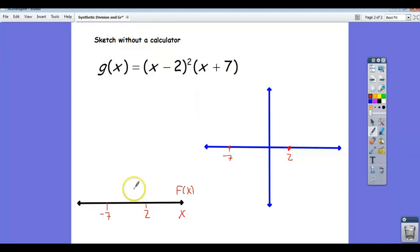And so now, the question is what's it doing in between the zeros and outside of them, as x goes to positive infinity and negative infinity. So the way to answer that is to plug in a number to the left of negative 7 into the function. And all you care about is, is that number positive or negative?